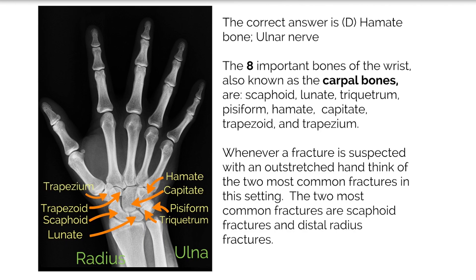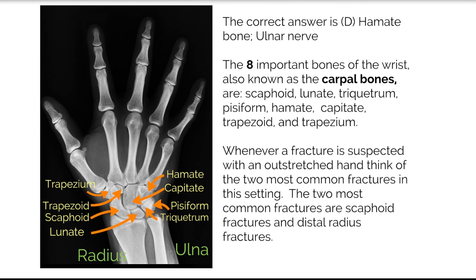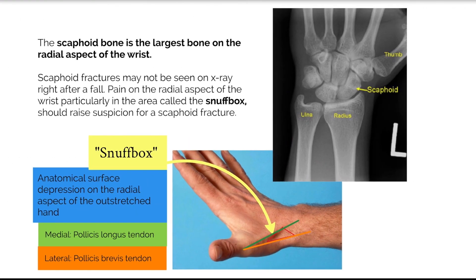Whenever a fracture is suspected with an outstretched hand, think of the two most common fractures in this setting. The two most common fractures are scaphoid fracture and distal radius fractures. The scaphoid bone is the largest bone on the radial aspect of the wrist. Scaphoid fractures may not be seen on x-ray right after a fall. Pain in the surface depression on the radial side of the posterior outstretched hand, also known as the snuff box, should raise suspicion for a scaphoid fracture.